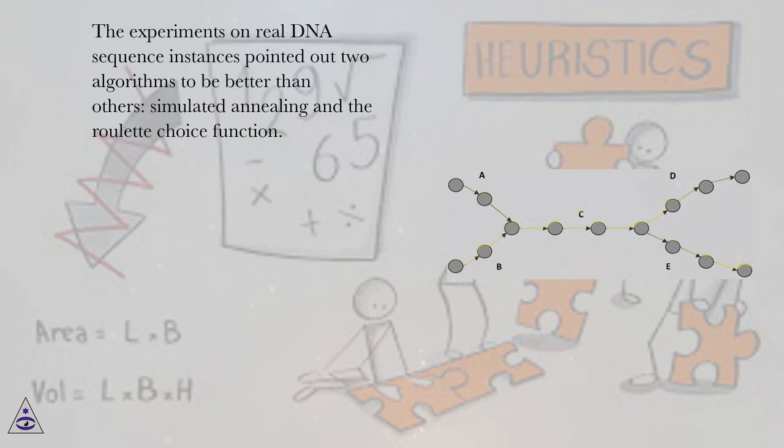The experiments on real DNA sequence instances pointed out two algorithms to be better than others: simulated annealing and the roulette choice function.